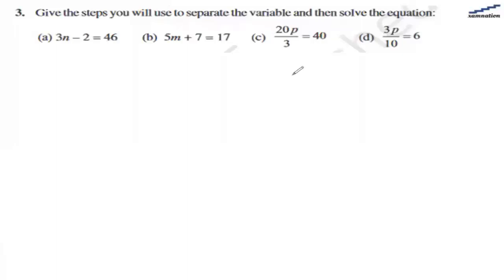In this question we are asked to give the steps used to separate the variable and then solve the solution. So first we have 3n minus 2 equals 46.